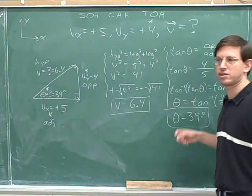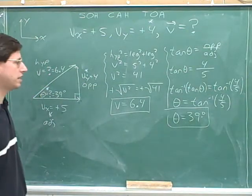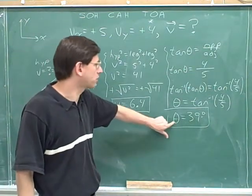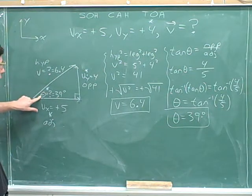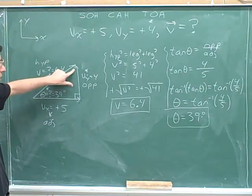Notice that this isn't going to mean anything to the reader unless you show them your picture as well. So if you want to indicate the direction with an angle, it's a good idea to include your picture so they can see where the 39 degrees is. Otherwise, they don't know whether you're talking about this angle or maybe this angle.